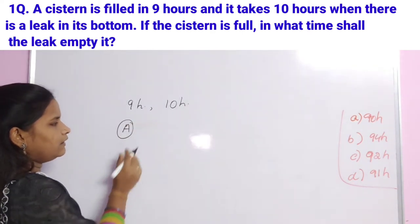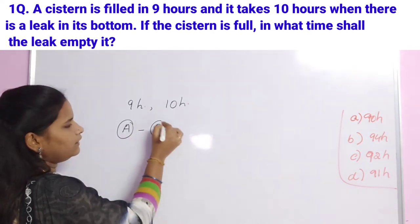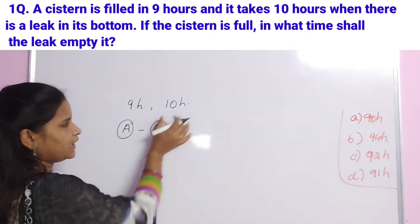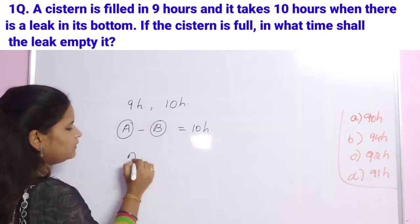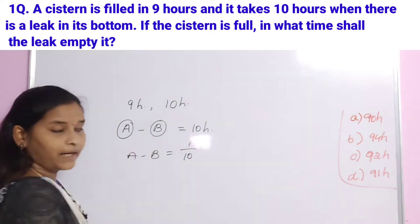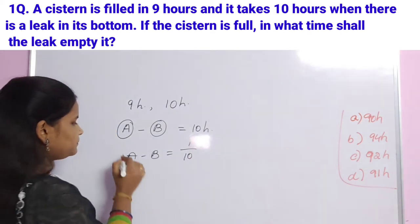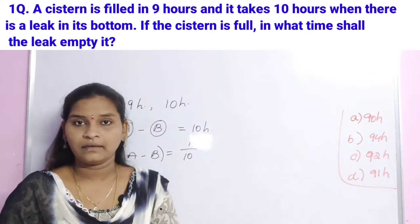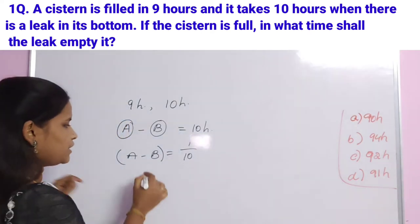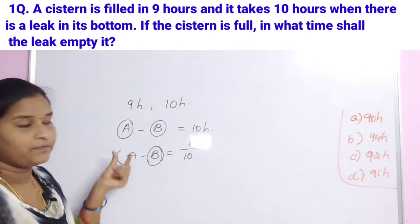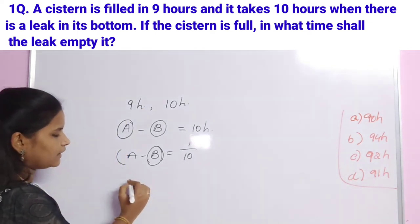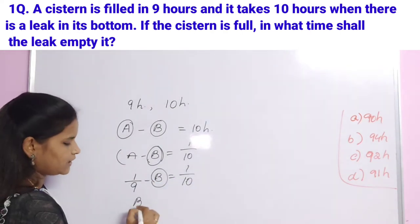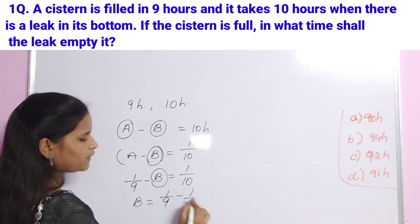First, find the 1-hour work. In 1 hour with both tap and leakage: 1/10th of the tank. We need to find how long the leak takes to completely empty the tank. The time for the tap to fill is 9 hours, so per 1 hour it fills 1/9. Now, A minus B equals 1/10, so B equals 1/9 minus 1/10.